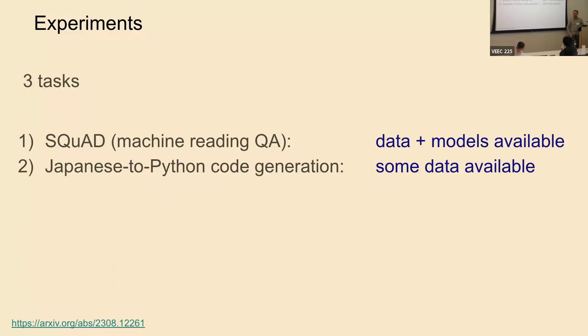Another one we had was Japanese to Python code generation. There's relevant data available in Hugging Face, but there's no training set for Japanese Python code generation in Hugging Face, or at least when we did this. Because of this, this is a harder situation. Also, there's not very good models for Japanese to Python. There are good Japanese models, there's good Python models, but not good Japanese Python models.